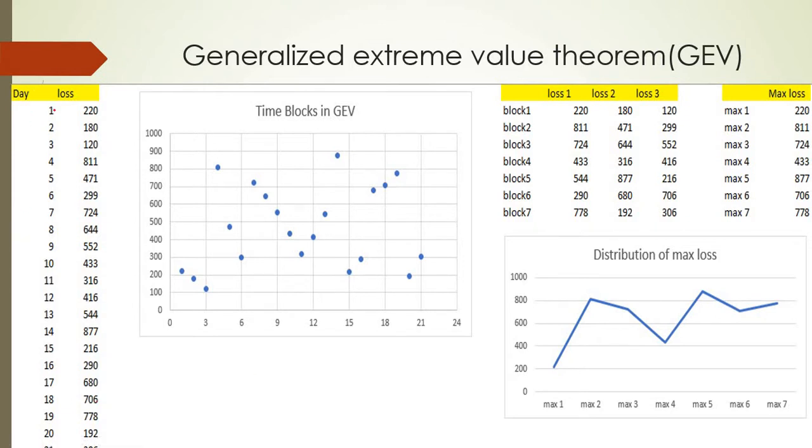Let's start with Generalized Extreme Value theorem and see how this defines the extreme value. Let's say this is our data for 21 days, where loss on day one was 220, similarly loss on day two was 180, and so on. When we draw a scatter chart, this is how it looks.